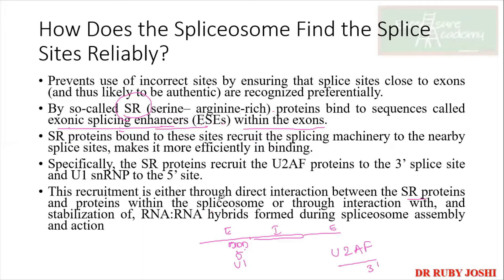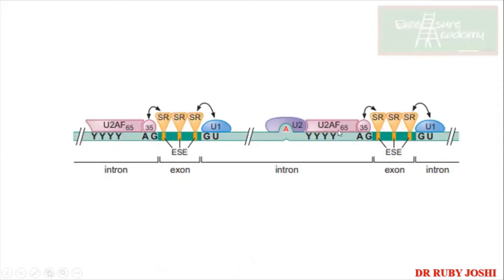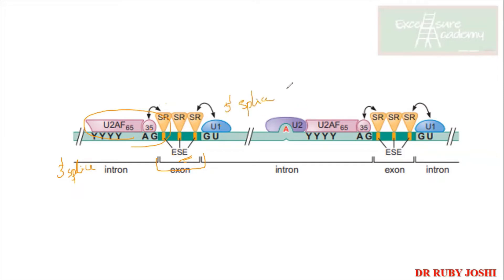This recruitment occurs either through direct interactions between SR proteins and spliceosome proteins, or via RNA-RNA hybrids formed during spliceosome assembly. In the figure, within the exonic region the ESE units are present, and SR proteins bind to them. You can see they interact with both U1 and U2AF35. U2AF35 binds at the 3' splice site of the intron and U1 binds at the 5' splice site of the intron.